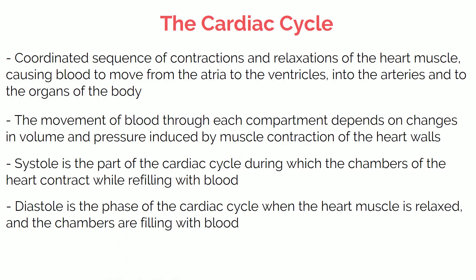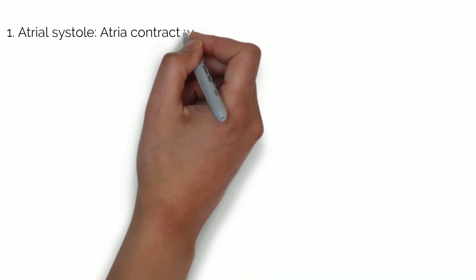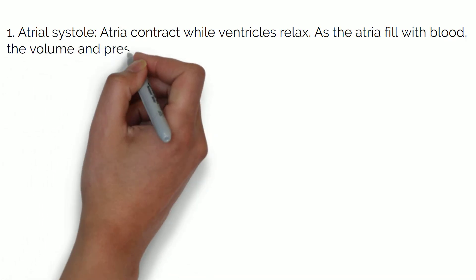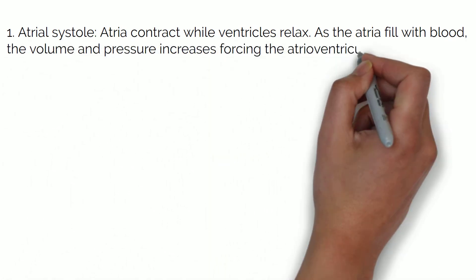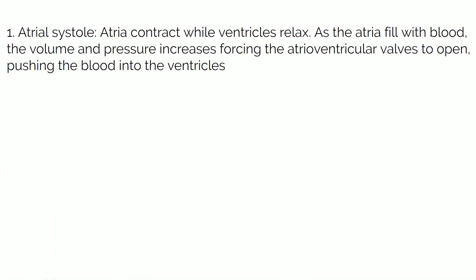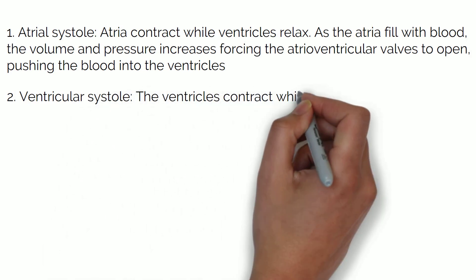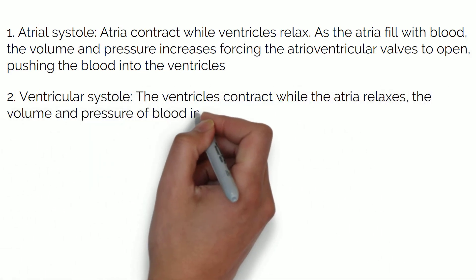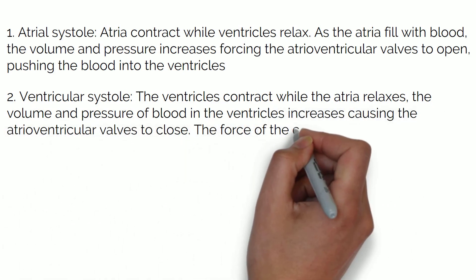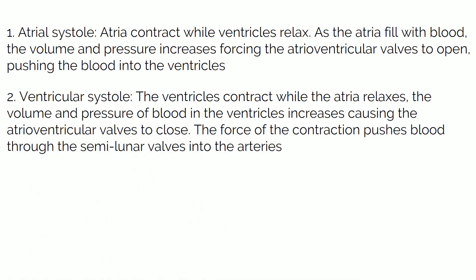The cardiac cycle consists of three stages. Stage 1: Atrial systole — the atria contract while the ventricles relax. As the atria fill with blood, the volume and pressure increases, forcing the atrioventricular valves open and pushing blood into the ventricles. Stage 2: Ventricular systole — the ventricles contract while the atria relax. The volume and pressure of blood in the ventricles increases, causing the atrioventricular valves to close. The force of the contraction pushes blood through the semilunar valves into the arteries.